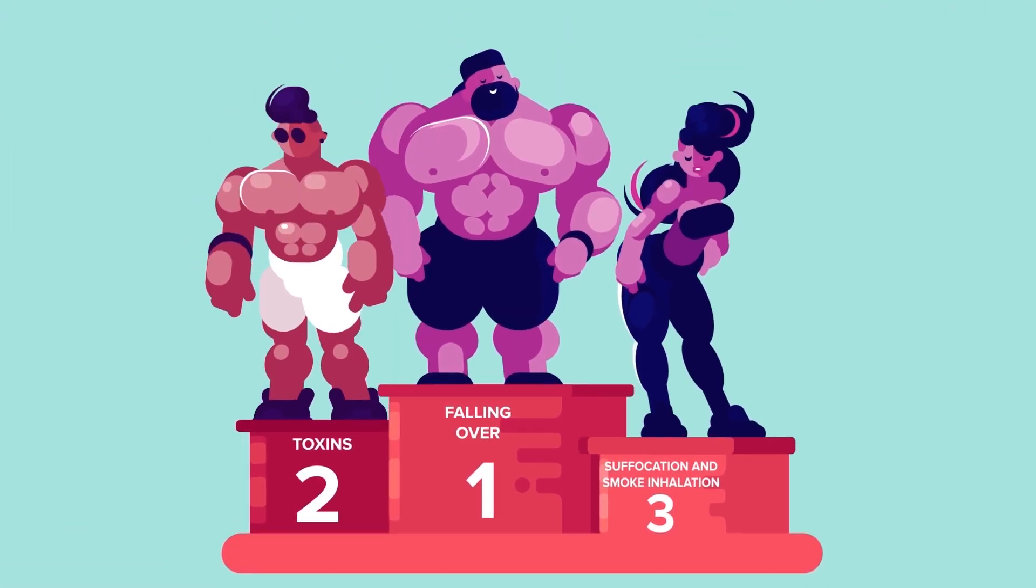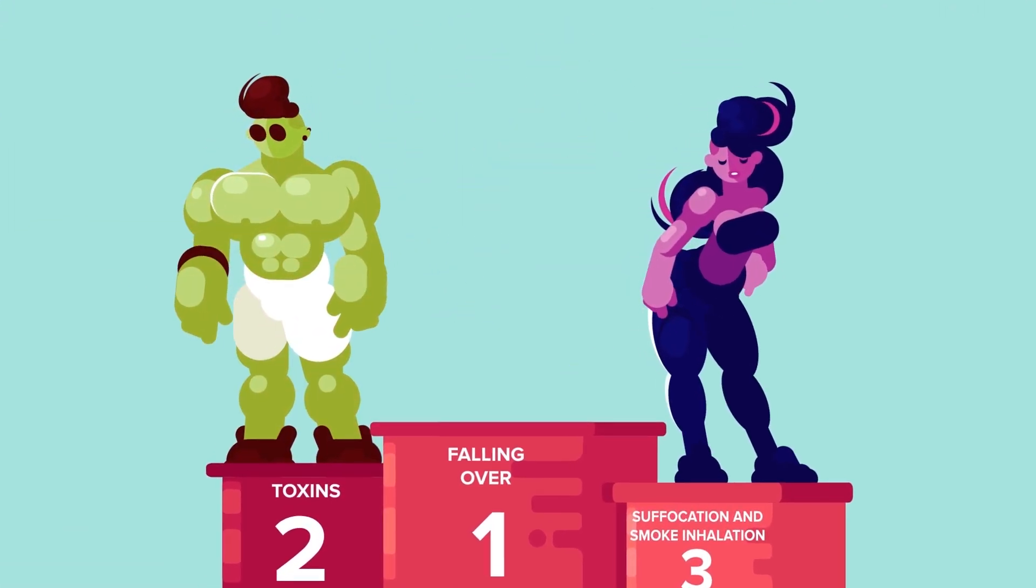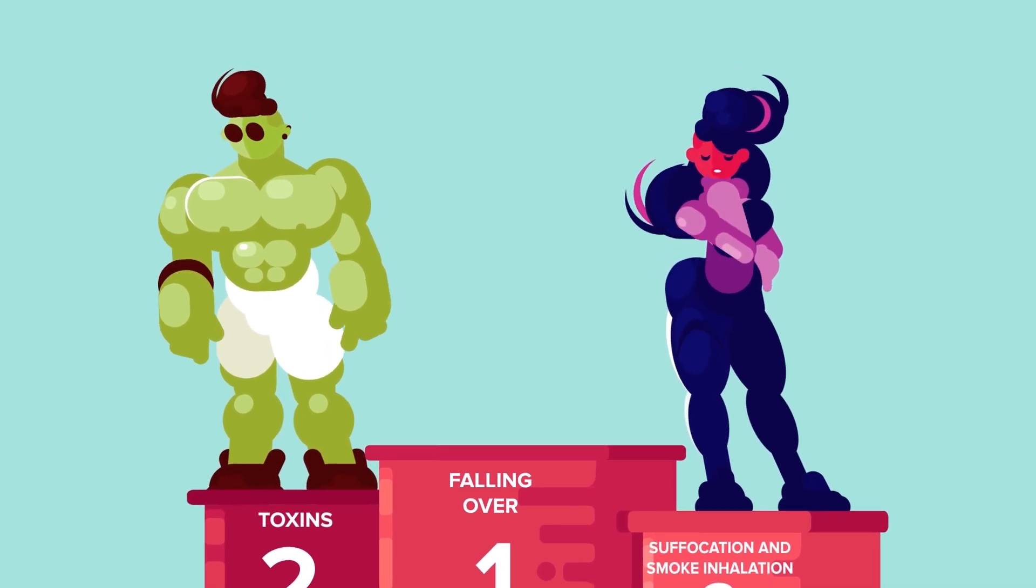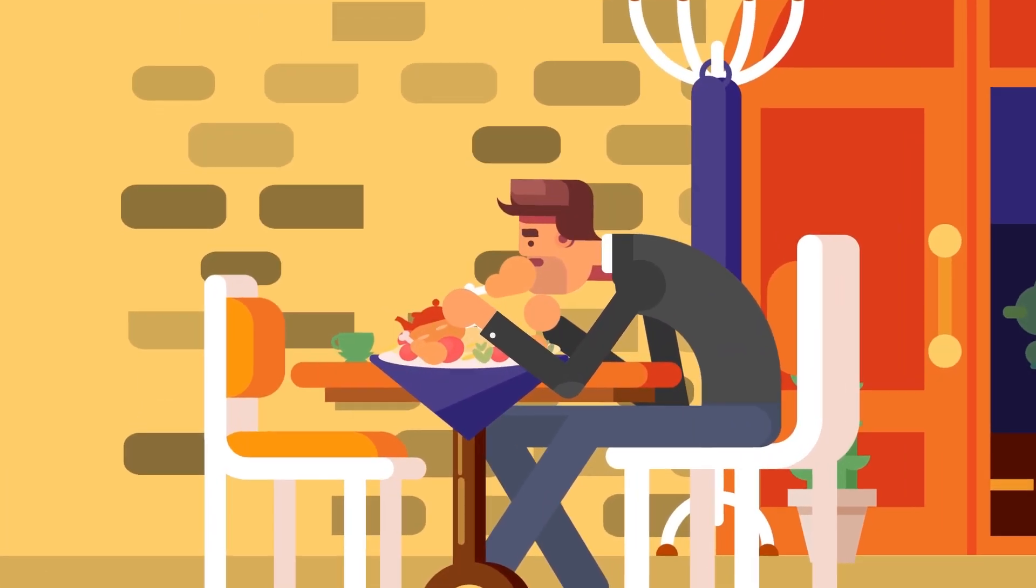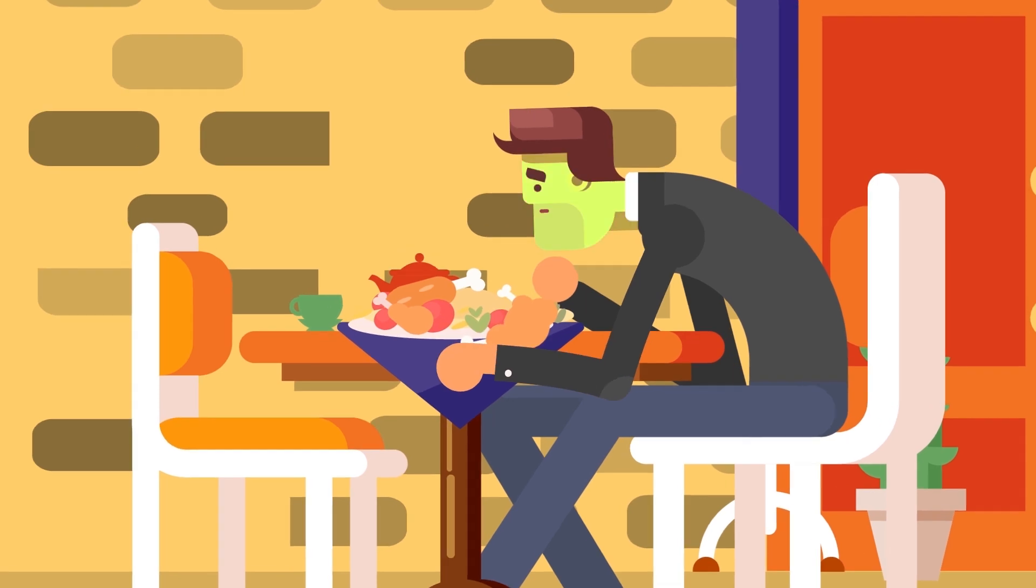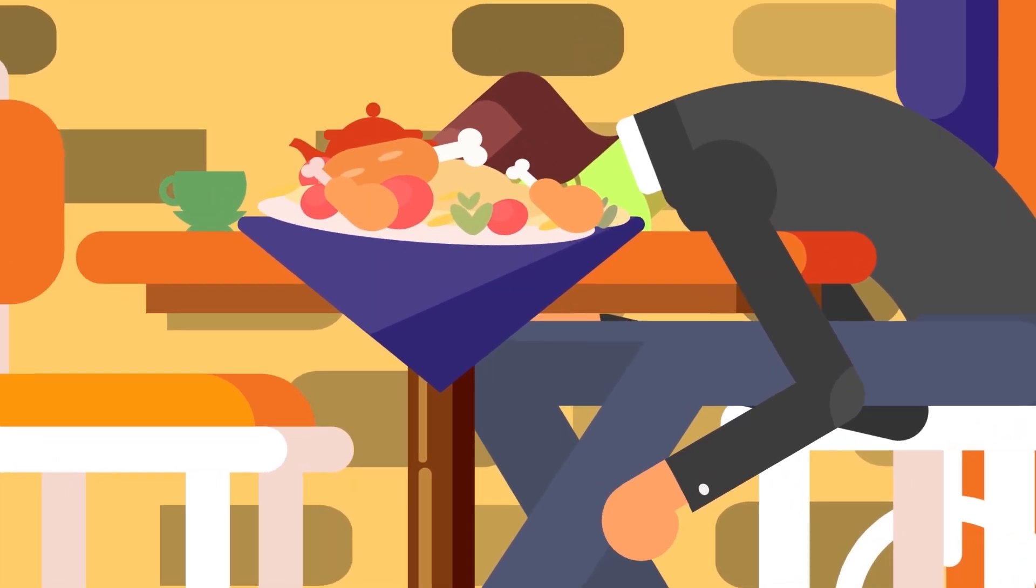The leading causes of death and suffering in the home are falling over, toxins, suffocation, and smoke inhalation. Poisoning alone caused the deaths of 12,500 people in 2002 in the United States, so watch out what you ingest while rifling through that medicine cabinet.